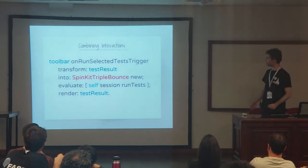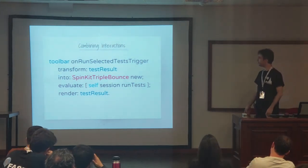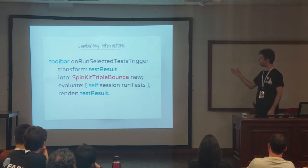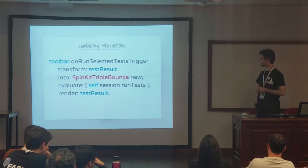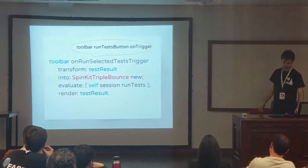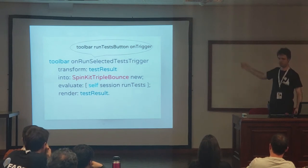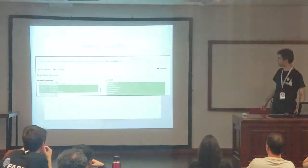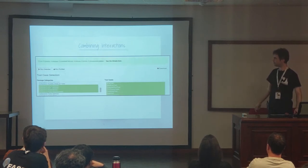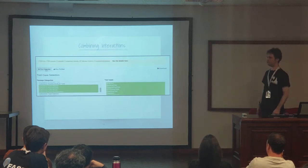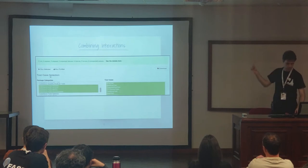Now some real-life examples that we are actually using in production. For example, you can combine interactions. We have a toolbar, and on trigger of the run-selected-test button, we want to transform the test result component into a working bouncing image, evaluate the code that runs the tests on the session, and then give you the results. You click on run selected, it shows the working bouncing indicator, and then it shows the results.